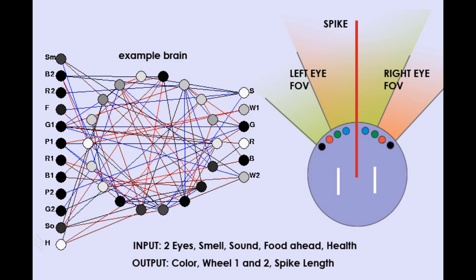These inputs are fed into the hidden layer whose size and connectivity can vary, but is usually around 6 to 20 neurons and roughly 2 to 6 inputs per neuron. Lastly, there are six outputs. Three neurons control the amount of red, green, and blue that this bot should turn, two neurons control wheel 1 and wheel 2 speed, and the last neuron controls the length of the spike.